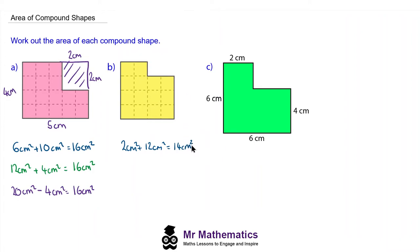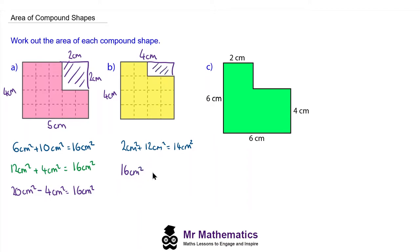Now I'm going to work out the same area using a different method. Rather than adding two rectangles together, we can make it into one larger square which is four centimeters by four centimeters — so 16 centimeters squared — take away the two missing pieces, and again we get 14 centimeters squared.